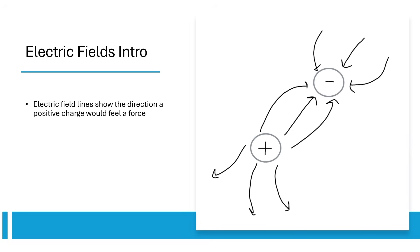Electric field lines show the direction a positive charge would feel a force. There are a couple rules for E-fields. They point from positive to negative charges, never cross, and more concentrated E-field lines means a stronger E-field.